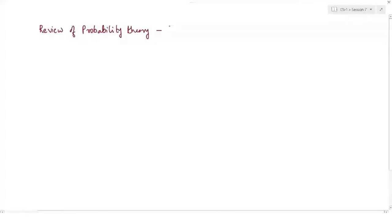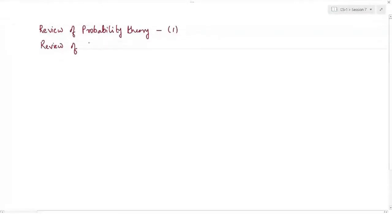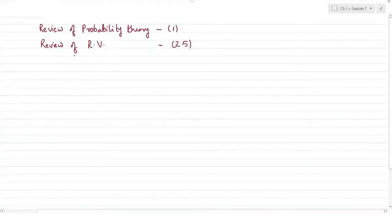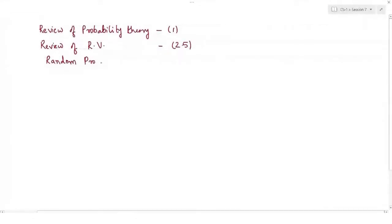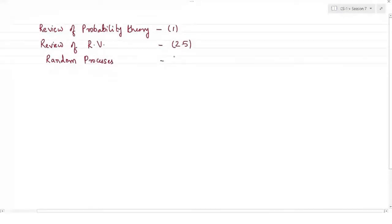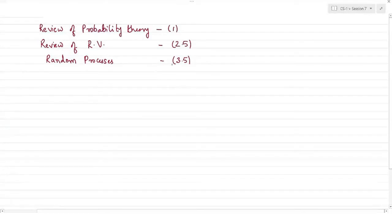Today's session I hope to complete the probability review in just one session. There will also be a session on review of random variables, which may consume around two and a half sessions. Then with these two important concepts, we will study random processes, which is required for our course — this may take around three and a half hours. Together we will try to finish it in six to seven sessions, covering this week and next week as the complete second half of this unit.